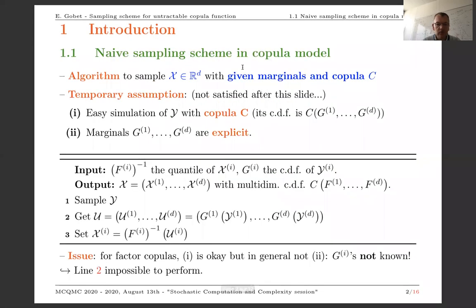First, I'm going to recall how to sample a given copula model. Let's say you are interested in sampling X taking value in R^d, so you have d components. You know the marginals of this model, and the copula function is known through another model which shares the same copula. So let's say you can simulate a random variable Y which has the same copula as X. You know the marginal CDF of Y, and the algorithm is the following.